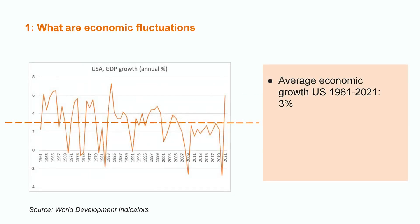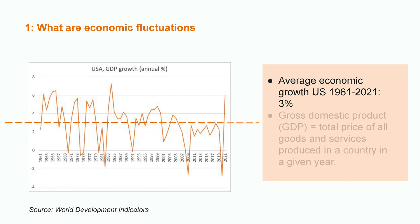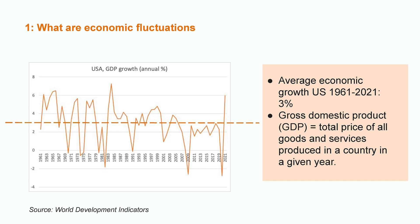On average, the economy of the United States grew by 3% between 1961 and 2021. When we talk about the size of the economy, we usually mean gross domestic product, or the total price of all goods and services produced in a given economy in a given year. So, on average, each year, the total market value of goods and services was 3% higher than the year before. This is long-run economic growth.